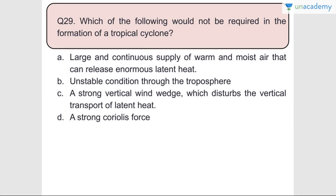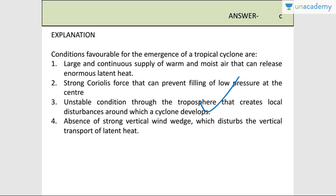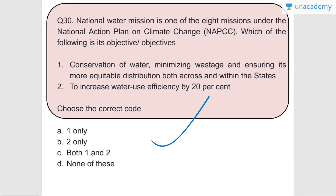Question number twenty-nine: Which of the following would not be required in the formation of a tropical cyclone? A large and continuous supply of warm and moist air that can release enormous latent heat - required. Unstable conditions through the troposphere - required. A strong Coriolis force - required. A strong vertical wind shear which disturbs the vertical transport of latent heat - this is wrong; absence of strong vertical wind shear is actually a favorable condition. Answer is C. The required conditions include warm moist air, strong Coriolis force, unstable tropospheric conditions, and absence of strong vertical wind shear.